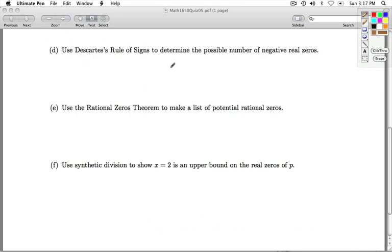Part D, we're asked to use Descartes' rule of signs to determine the possible number of negative real zeros. So, our polynomial P of x is 2x cubed minus 4x plus 3. So, I'm going to look at P of the opposite of x. So, when I substitute negative x, I'm going to get negative 2x cubed plus 4x plus 3.